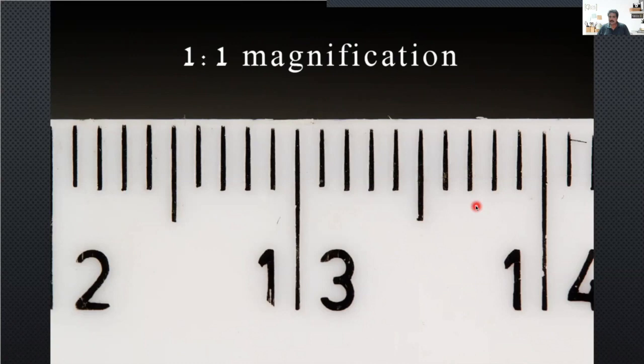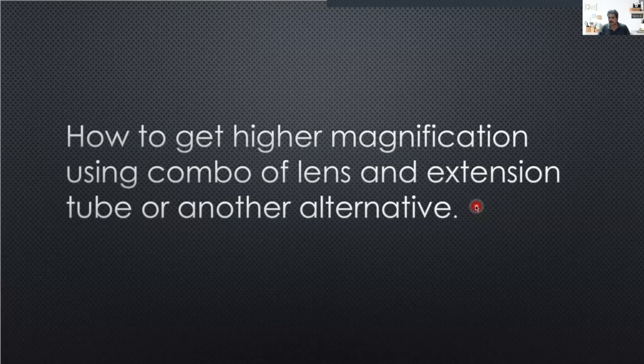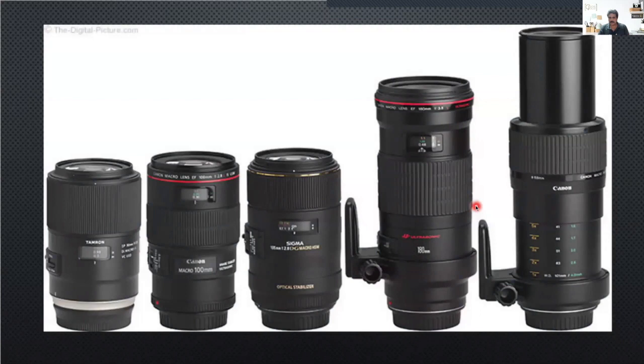One of the questions asked was: should we go for only macro lenses to get macro? How do you get higher magnification? Can you use a combination of lenses, extension tubes, or other alternatives? If you are exclusively specializing in macro, you might as well buy a macro lens. Let me cover the technical part first — how do you go closer and manage these things.